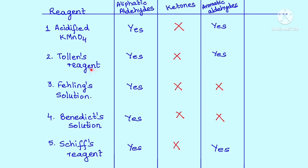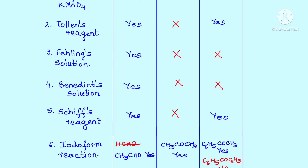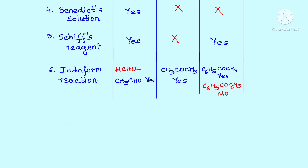Acidified KMnO4, Tollens', Fehling's, Benedict's, Schiff's — of course, exceptions are always there; these are basic generalizations. Ketones don't give these tests, but ketones give a special test. For aromatic aldehydes: KMnO4 yes, Tollens' yes, Fehling's no, Benedict's no, Schiff's yes. The special test is the iodoform reaction, shown by compounds having the CH3CO group — known as methyl ketones — or compounds which can be converted into the CH3CO group.